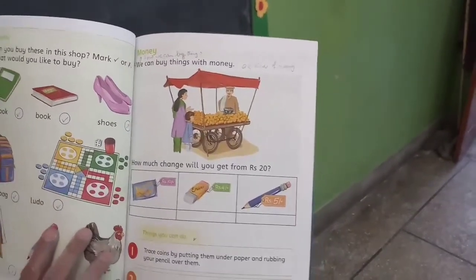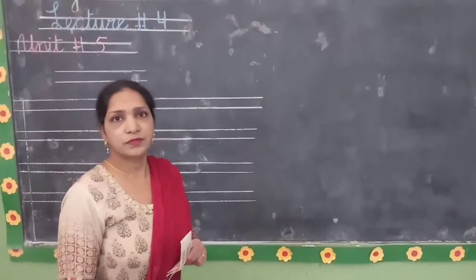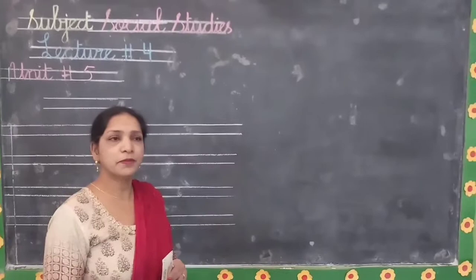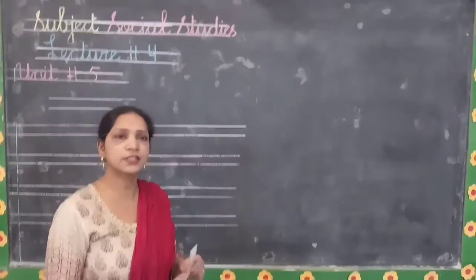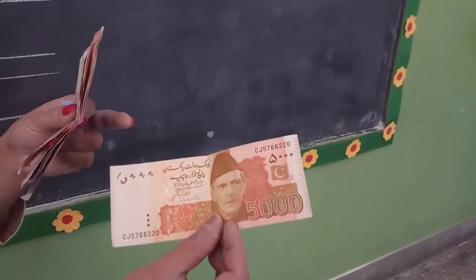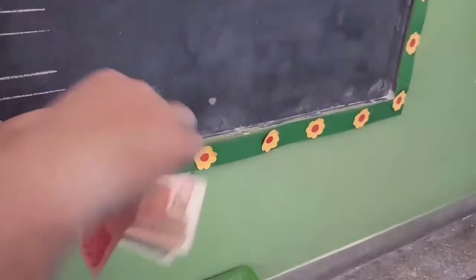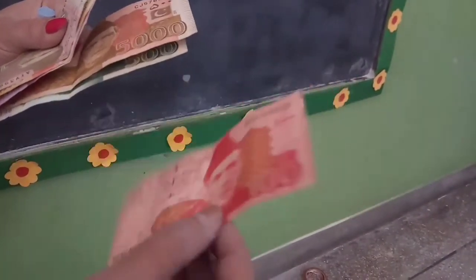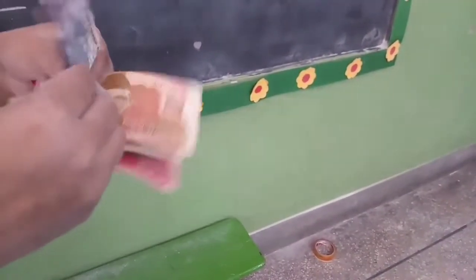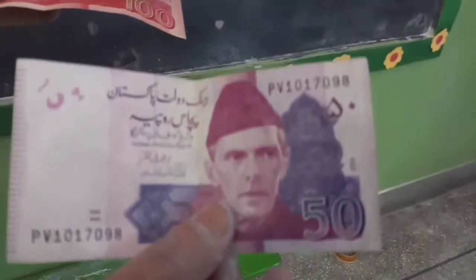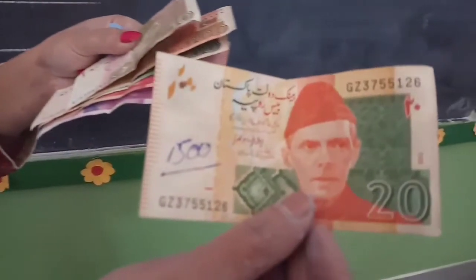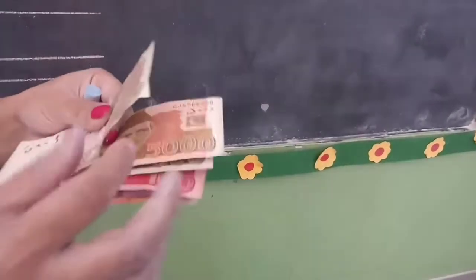Today, we are going to discuss about money. I will tell you about money. Today's topic we will explain. I have some money. I have a note of 5,000. This is a note of 5,000.